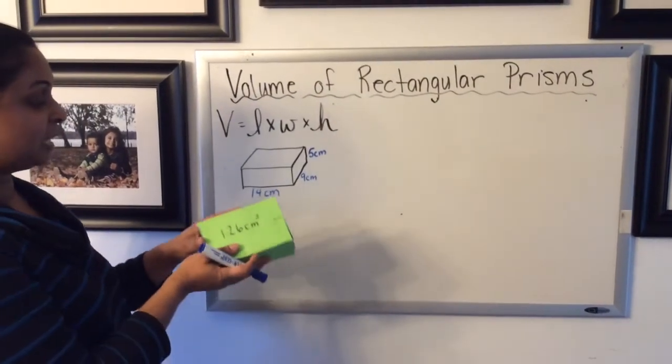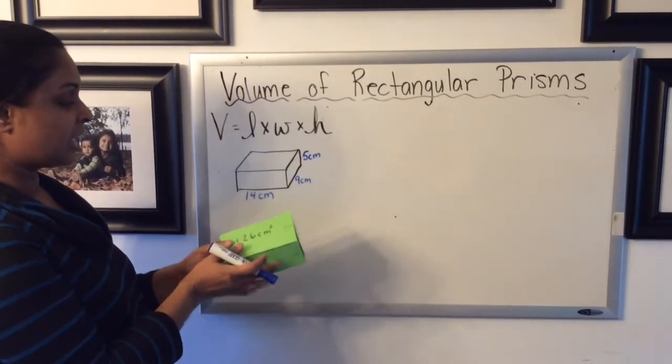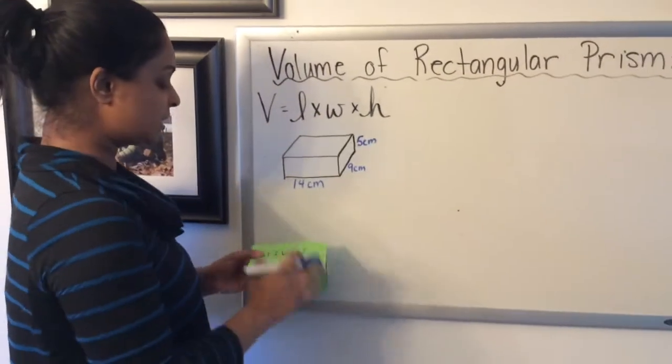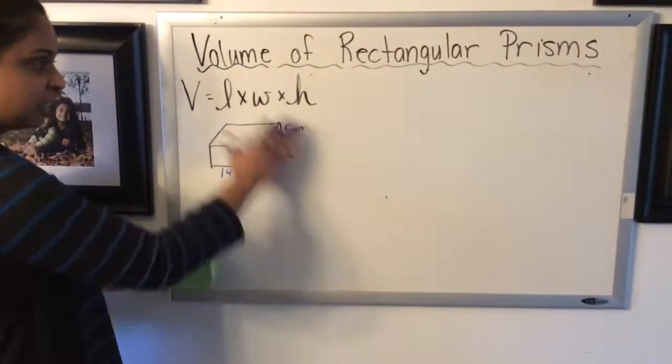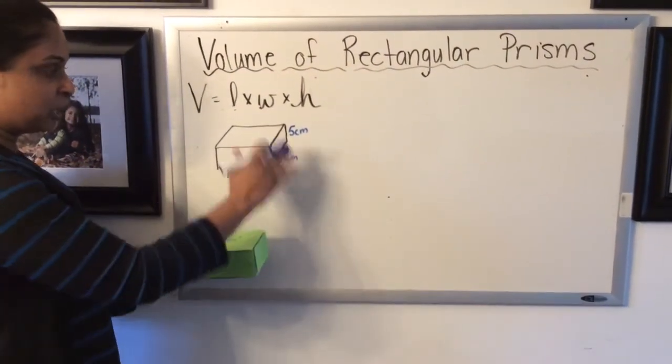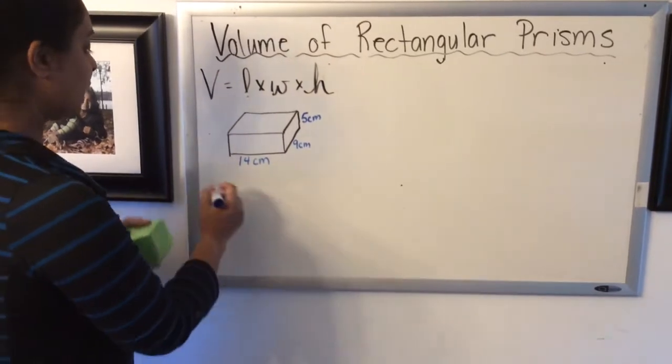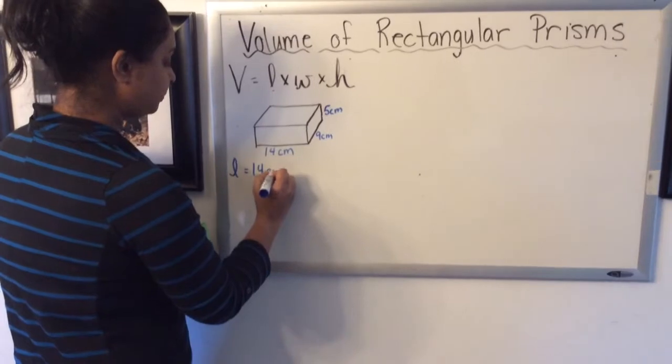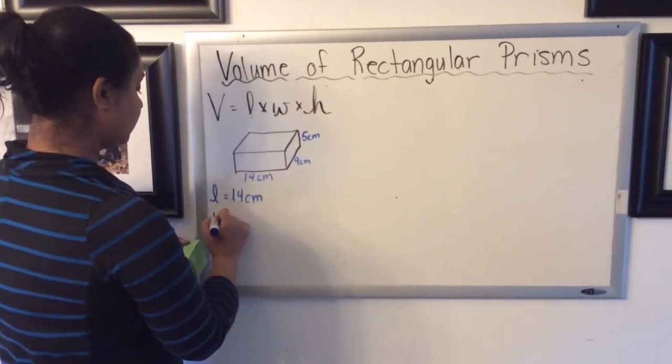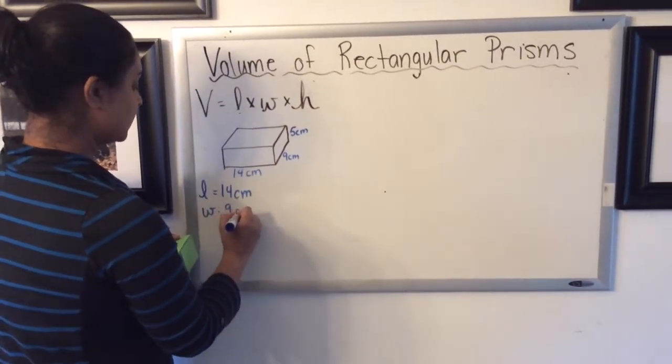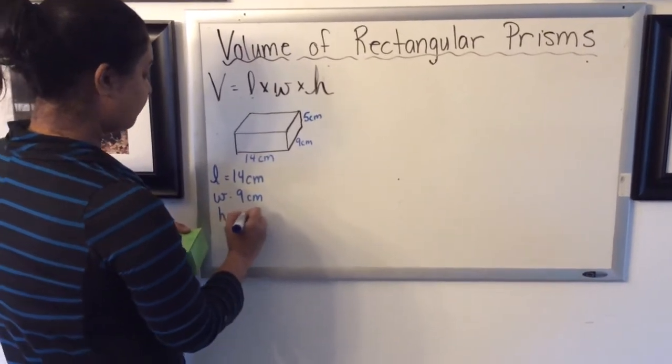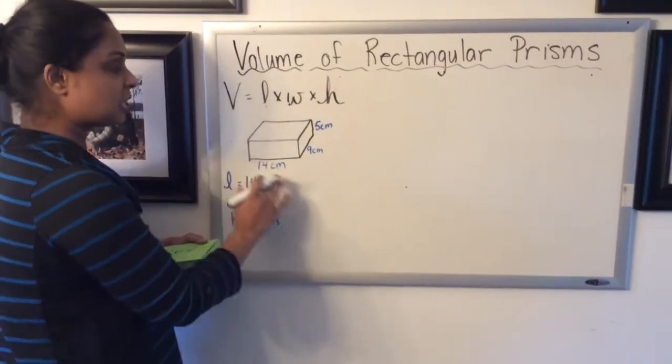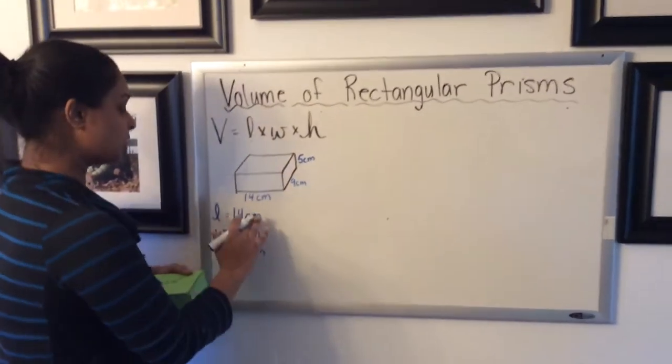So I have a rectangular prism here that I've made a model of and I've labeled the length, width and height, and those are the exact measurements that I need to find my volume. I've created a larger model here so that you can see all the measurements as well. So I know that my length is 14 centimeters, my width is 9 centimeters and my height is 5 centimeters, and I'm using just the centimeter unit as it is because I'm just describing length, so I just use that cm.